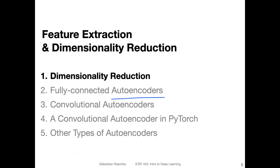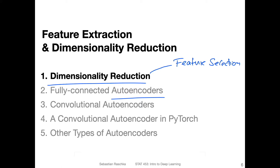Before we get to the topic of auto encoders, let us briefly talk about dimensionality reduction. Dimensionality reduction is a broad term for describing the reduction of the number of features in a data set. One subtopic of dimensionality reduction would be feature selection. If you have a data set with a large number of features, you can select a subset of these features — that would be feature selection.